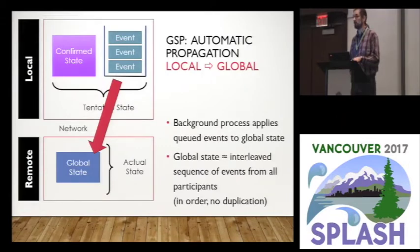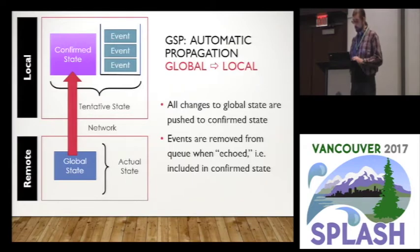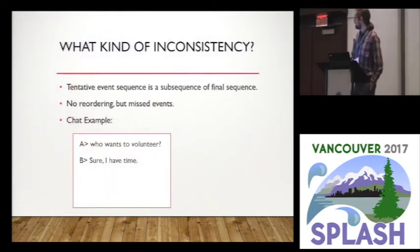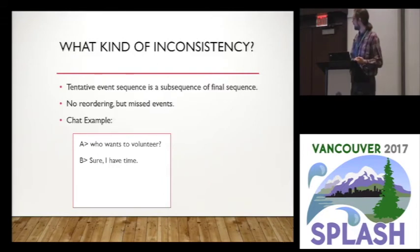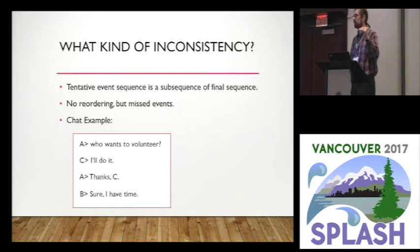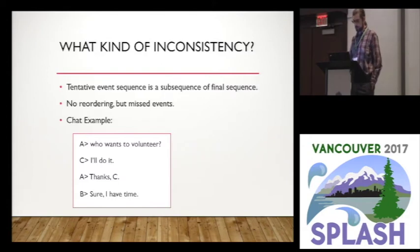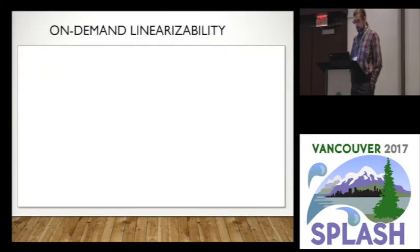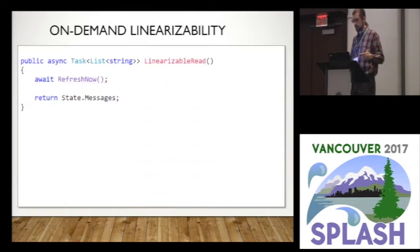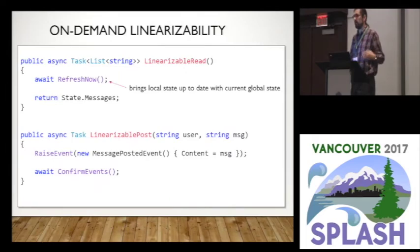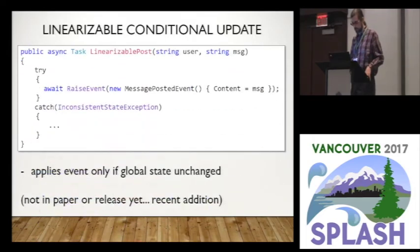Automatically those events propagate to the global state, and the global state is sent to all participants. What kind of inconsistency could you see? In the chat example, when you raise an event you may not see the current history. For example, A says 'who wants to volunteer?' and B says 'sure, I have time' — but in the meantime, C already said 'I will do it' and A said 'thanks, C'. So B replied to a stale state. That's the cost of having no coordination requirements on reads and writes. But you can restore this with on-demand linearizability — we give you fences where you can wait for propagation and be sure it happens.